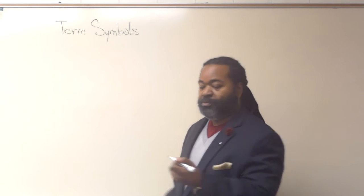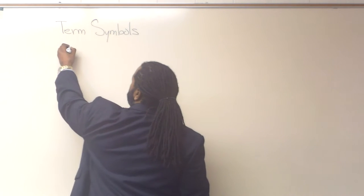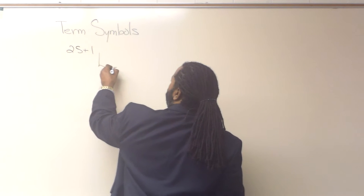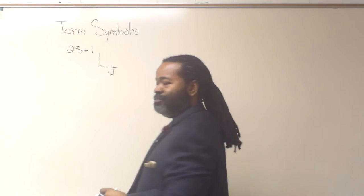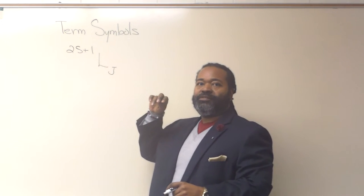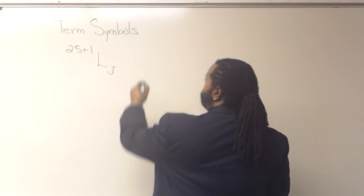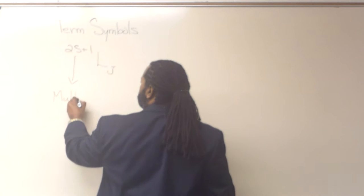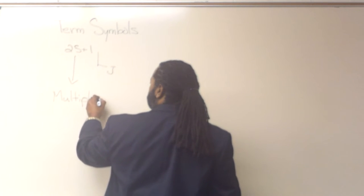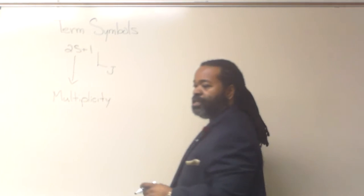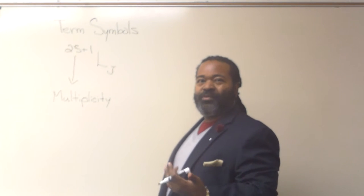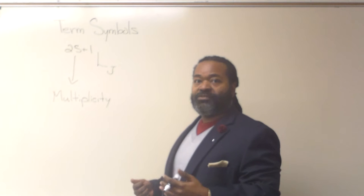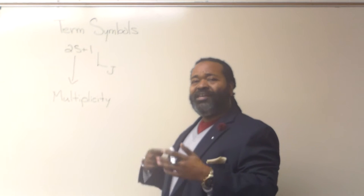So a term symbol consists of three parts, two of which are numbers and one of which is a letter, but they all start off in the same way. So the 2s plus one is the multiplicity. And this is determined based on the arrangement of the electrons as spin-ups and spin-downs and whether or not they're paired.